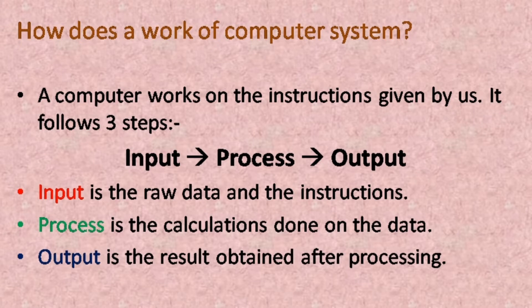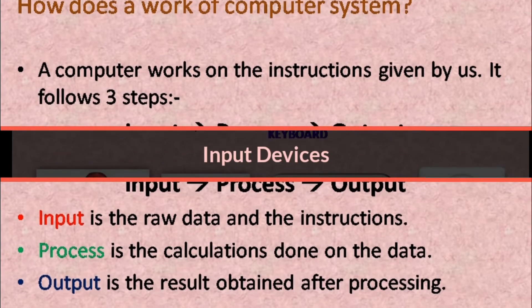The computer system works with the help of software and hardware. Hardware refers to the physical parts of a computer that we can touch and see. Software is a set of instructions that helps the hardware to work in the desired manner.